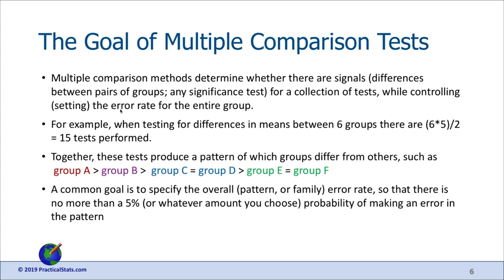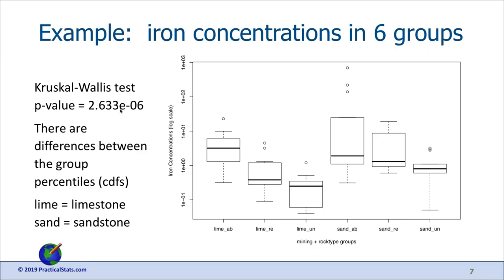An overall pattern error rate — sometimes called the family error rate — is the probability of no more than a certain percent chance, maybe 5%, of making at least one error in that pattern. Here's an example: six groups of iron concentrations in streams. The Kruskal-Wallis test says there are significant differences among these groups, as shown by the box plots. We'd like to know which ones are different from others, so we compare each box to all the others using the multiple comparison test procedure.